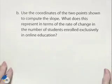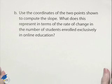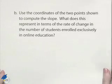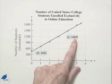Use the coordinates of the two points shown to compute the slope. What does this represent in terms of the rate of change in the number of students enrolled exclusively in online education? Well, the first point is 0, 449. The second point is 4, 1489.